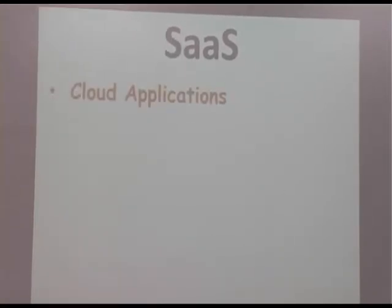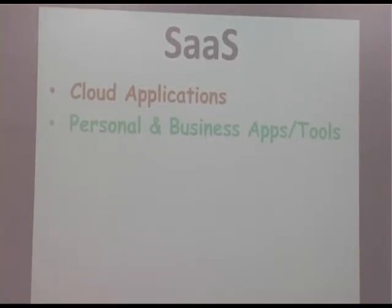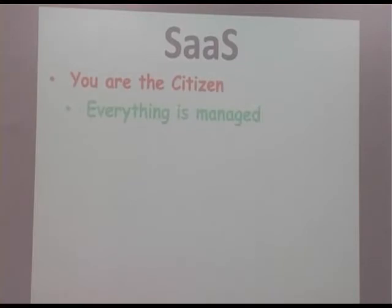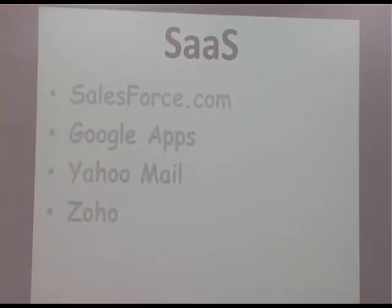Software as a Service — also called cloud applications — is where people have used platforms and infrastructure to build an application and you just subscribe and use it, either for personal or business apps. It typically comes with a free model for non-commercial use, a paid model for commercial or enterprise apps, and a freemium model where you get limited functionality or volume for free and pay beyond that. You are a citizen here — everything is managed by someone else, you have no control beyond your user preferences.